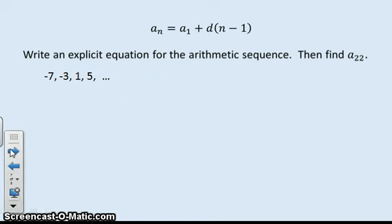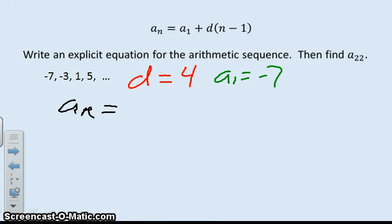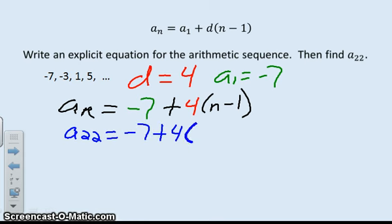Can you try this one by yourself? Okay. So my d. What do you got for d? Four. And a sub one. That is seven. That is seven. So my formula. So my formula will be a sub n equals negative seven plus four times n minus one. 77. What is it? 77. Yeah.